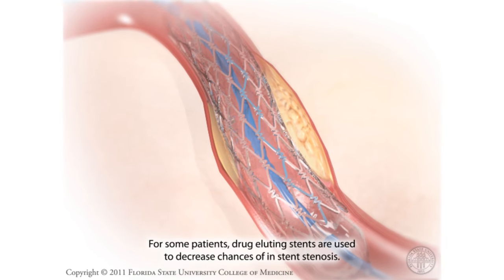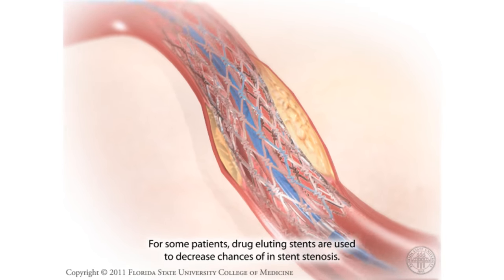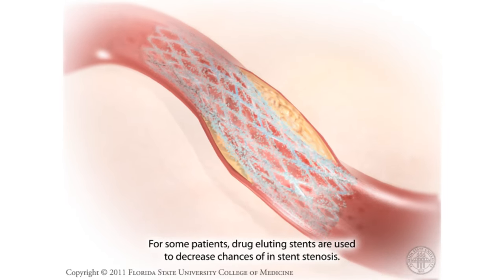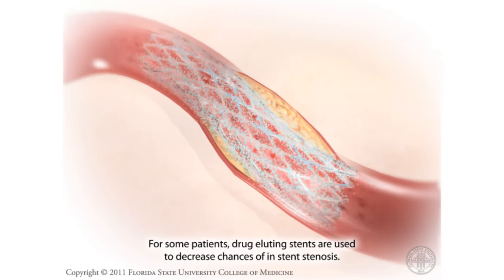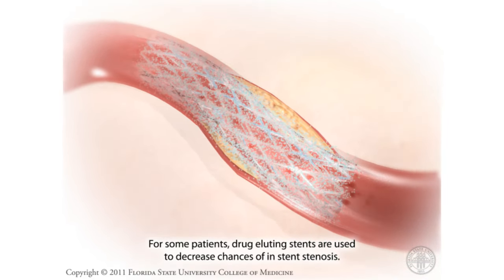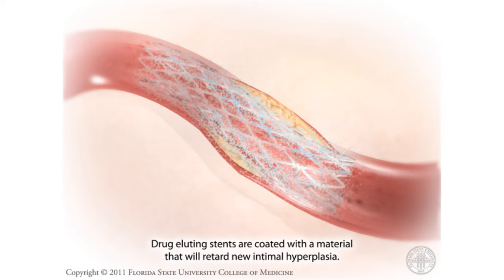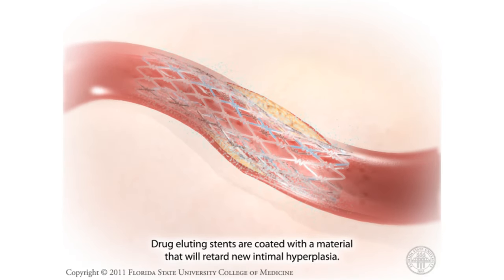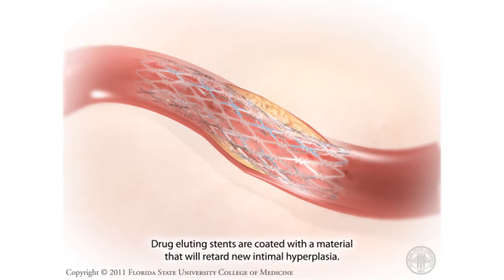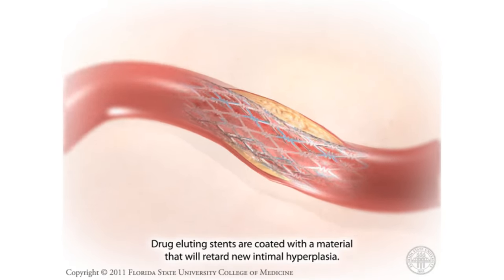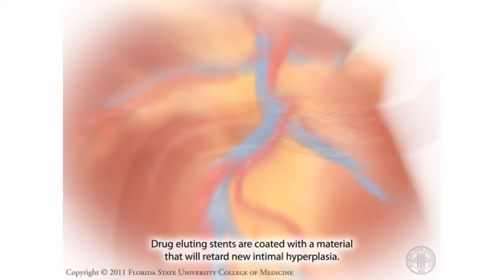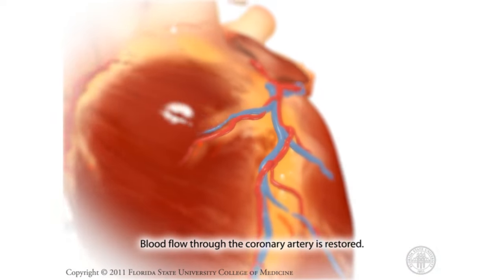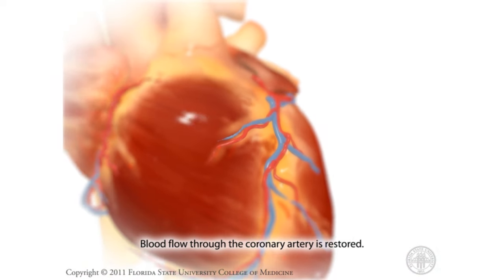For some patients, drug-eluting stents are used to decrease the chances of instant stenosis. Drug-eluting stents are coated with a material that will retard new intimal hyperplasia. Blood flow through the coronary artery is restored.